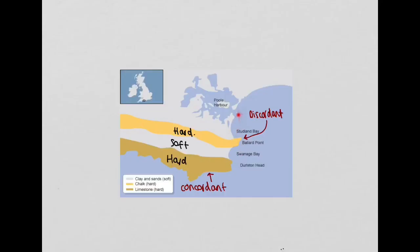In comparison to this coastline, which is discordant, we get differing rates of erosion. We can see our band of hard rock sticks out, our second band of hard rock sticks out, and our soft rock is clearly being eroded at a quicker rate than our two bands of hard rock.